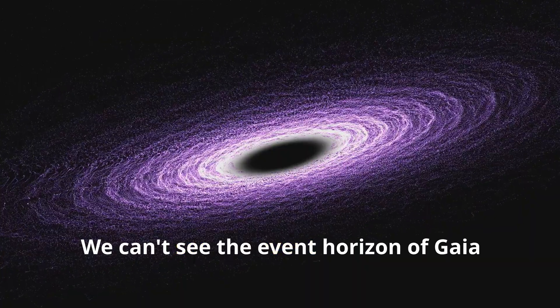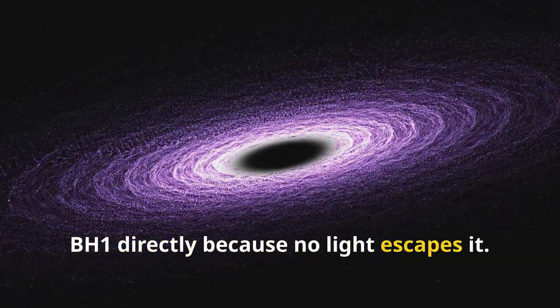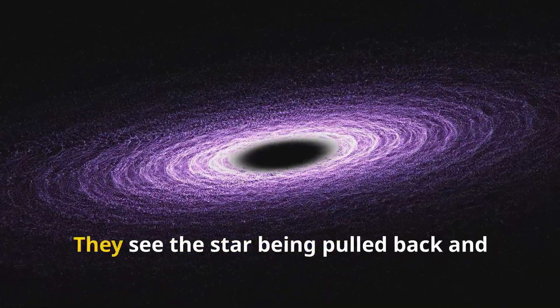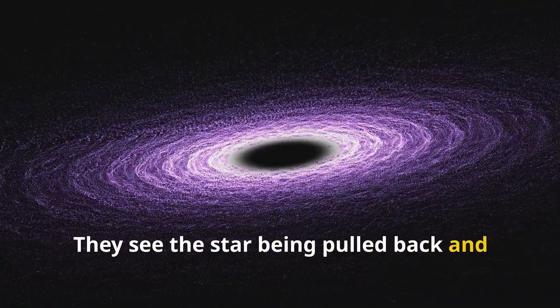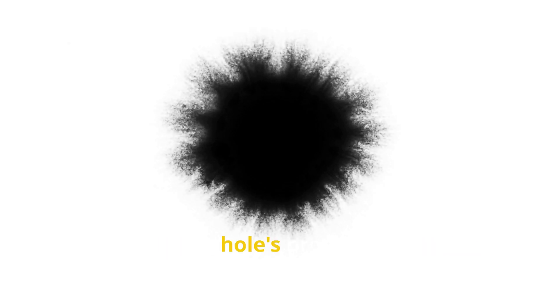We can't see the event horizon of Gaia BH1 directly because no light escapes it. But scientists can study how it affects the nearby star. They see the star being pulled back and forth by the black hole's gravity like a cosmic dance. This helps them learn more about the black hole's properties like its mass and spin.